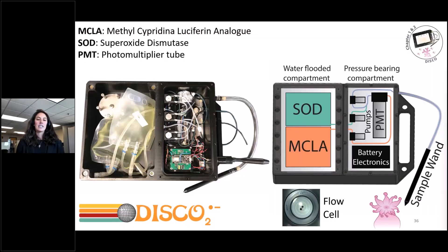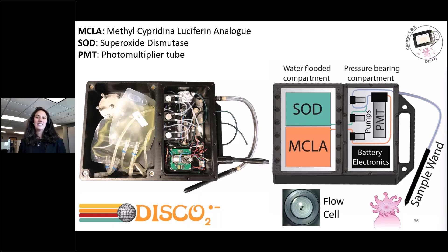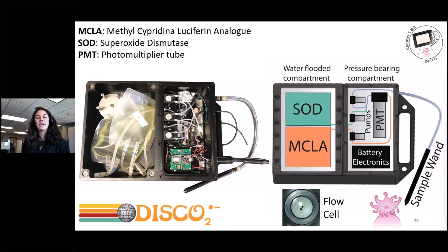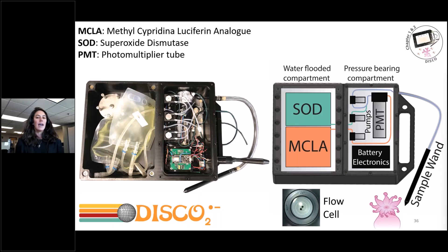DISCO uses a flow injection chemiluminescent method. It uses a reagent — MCLA — that emits light when it reacts with superoxide, and this reaction is very specific to superoxide. It has three microfluidic pathways: using the sample pathway, we take an analyte fluid, and simultaneously the reagent MCLA mixes with this analyte fluid in a spiral flow cell. This mixture causes the superoxide in the analyte fluid to emit photons proportional to its concentration. A photomultiplier tube adjacent to the flow cell measures the light produced, telling us how much superoxide is in the sample. We also use SOD, the superoxide-degrading enzyme, to spot-check and verify that we are measuring superoxide.